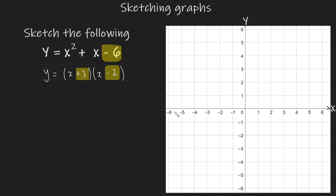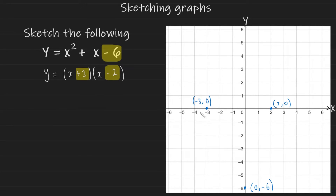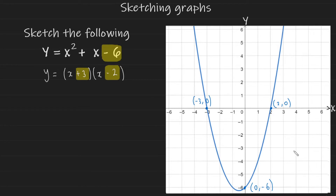So let's see what that looks like. I know it's going to cut my y-axis at minus 6, so I'm going to put a point there and label it. Now it's going to cut my x-axis at minus 3 and positive 2. Now that you've labeled all the intersection points you can go ahead and draw this graph. This is a positive quadratic so it's going to be a u-shape.